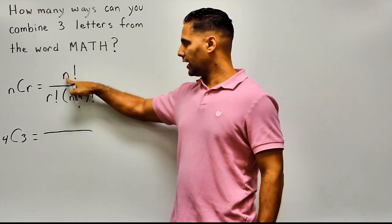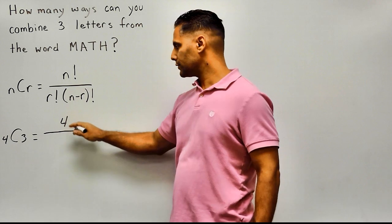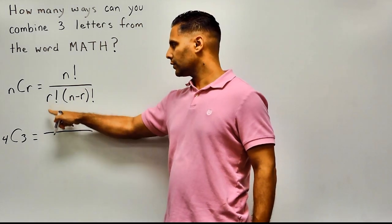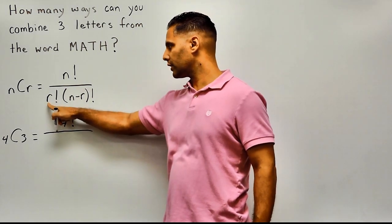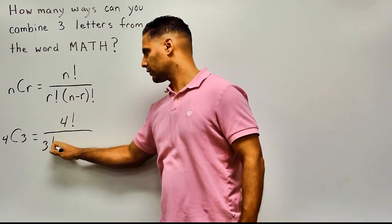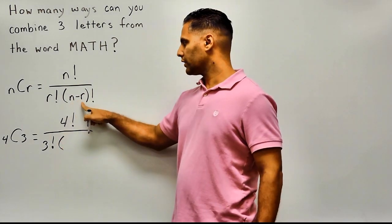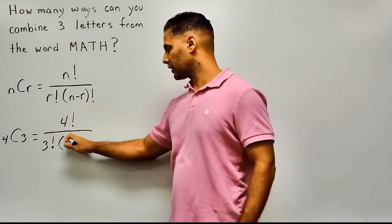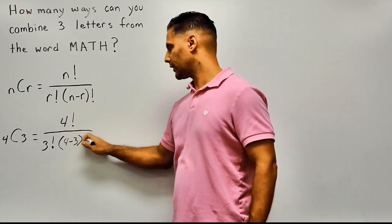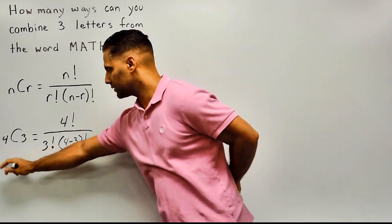So the N in the numerator is going to be four, and we have to figure out what four factorial is. For the denominator, we plug the value three in for R because we are selecting three objects, so that's going to be three factorial. N take away R is going to be four minus three in our case, and we have to take that difference and find the factorial of it.